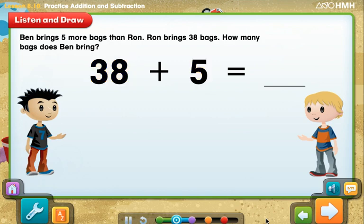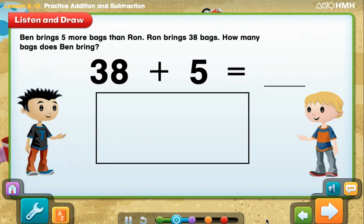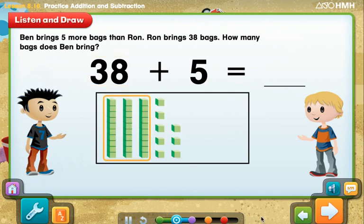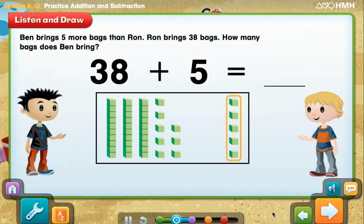There are many ways you can add these two numbers. Let's use base-10 blocks to make a model. Start by showing 38. 38 is made up of 3 tens blocks and 8 ones blocks. Next, show 5 more. These are 5 ones blocks.